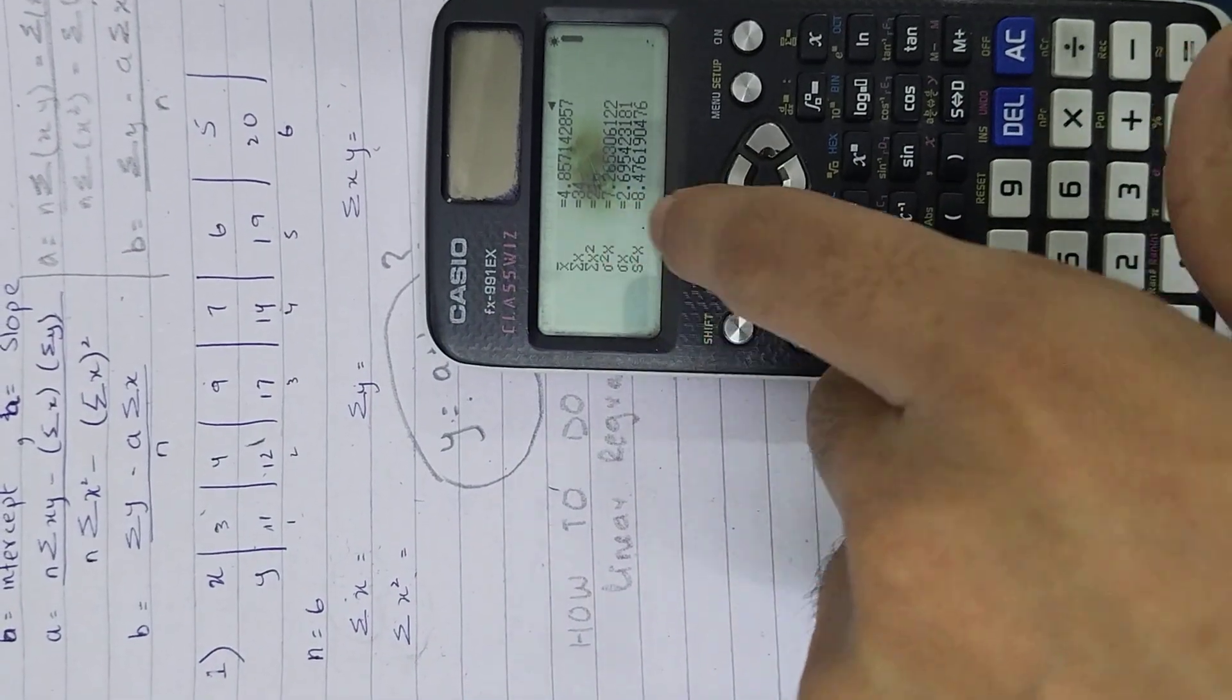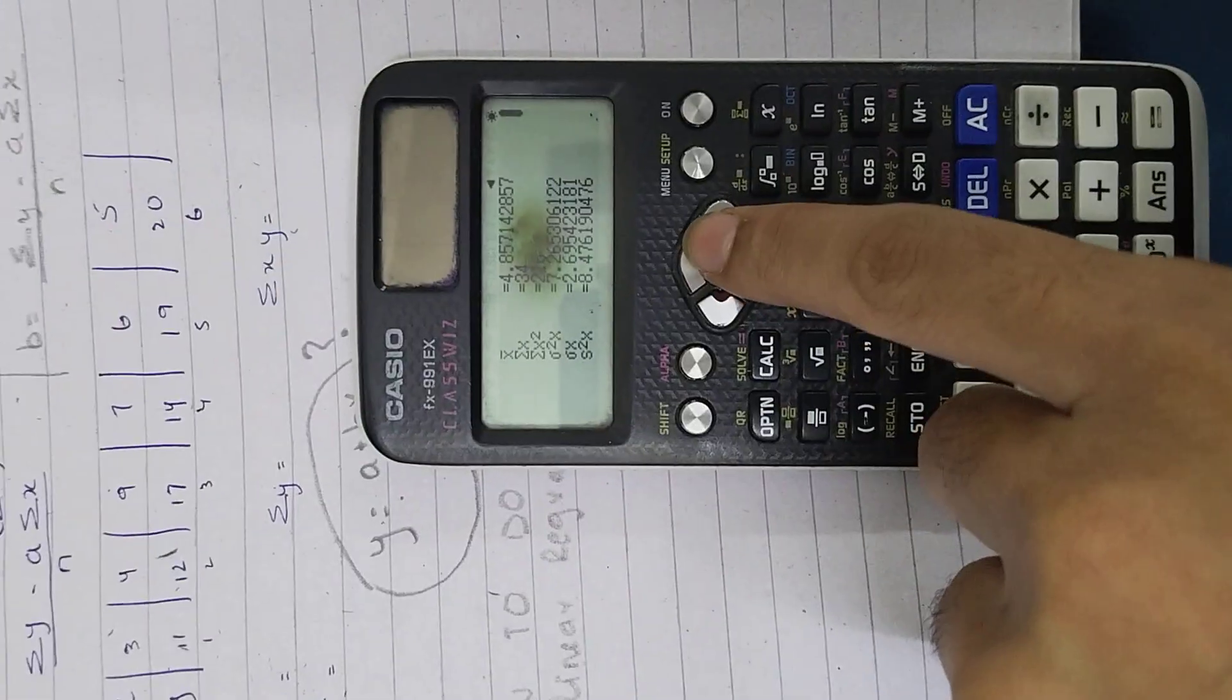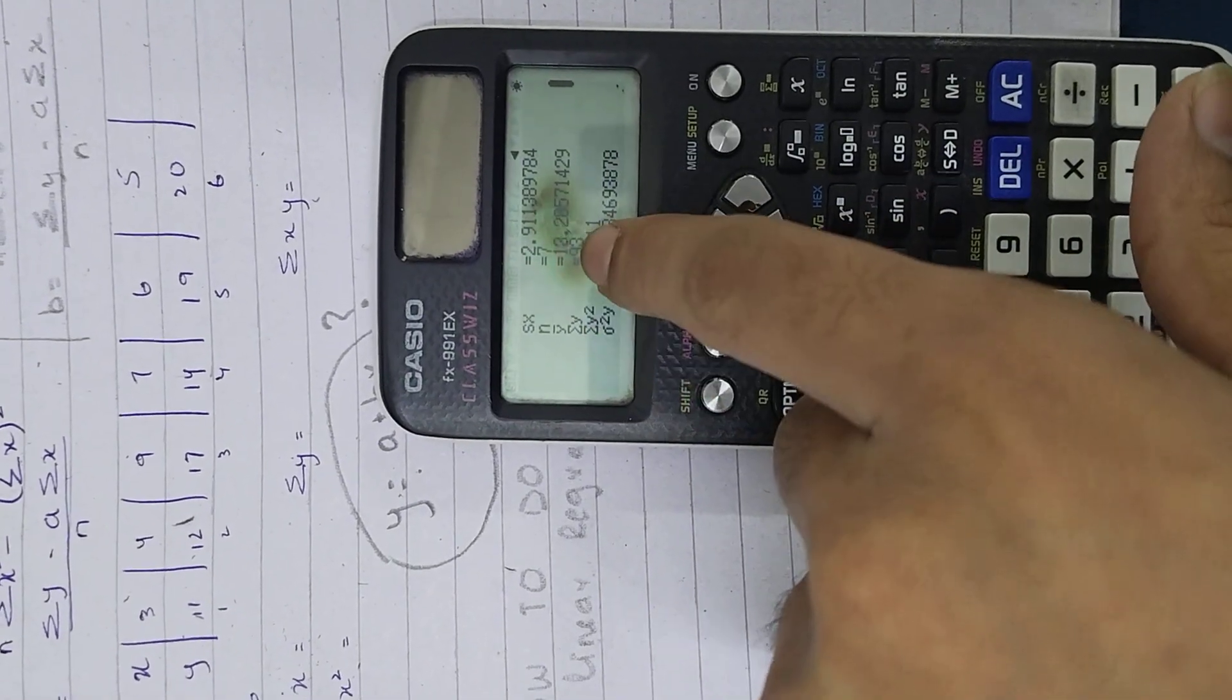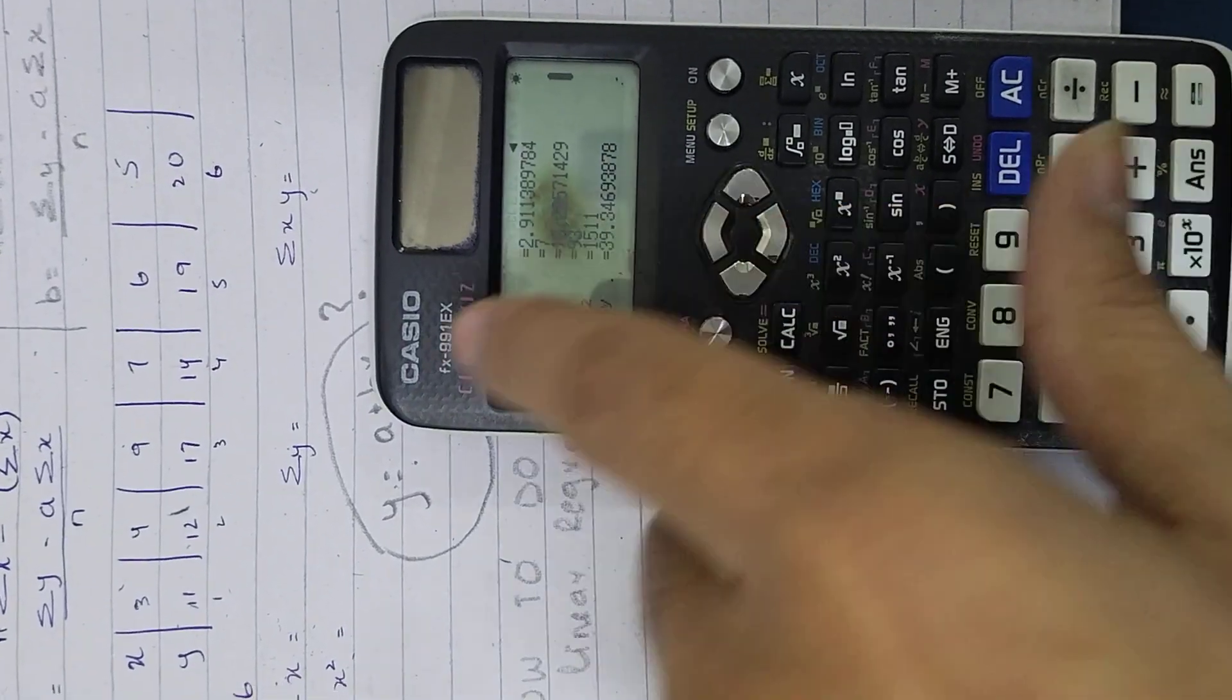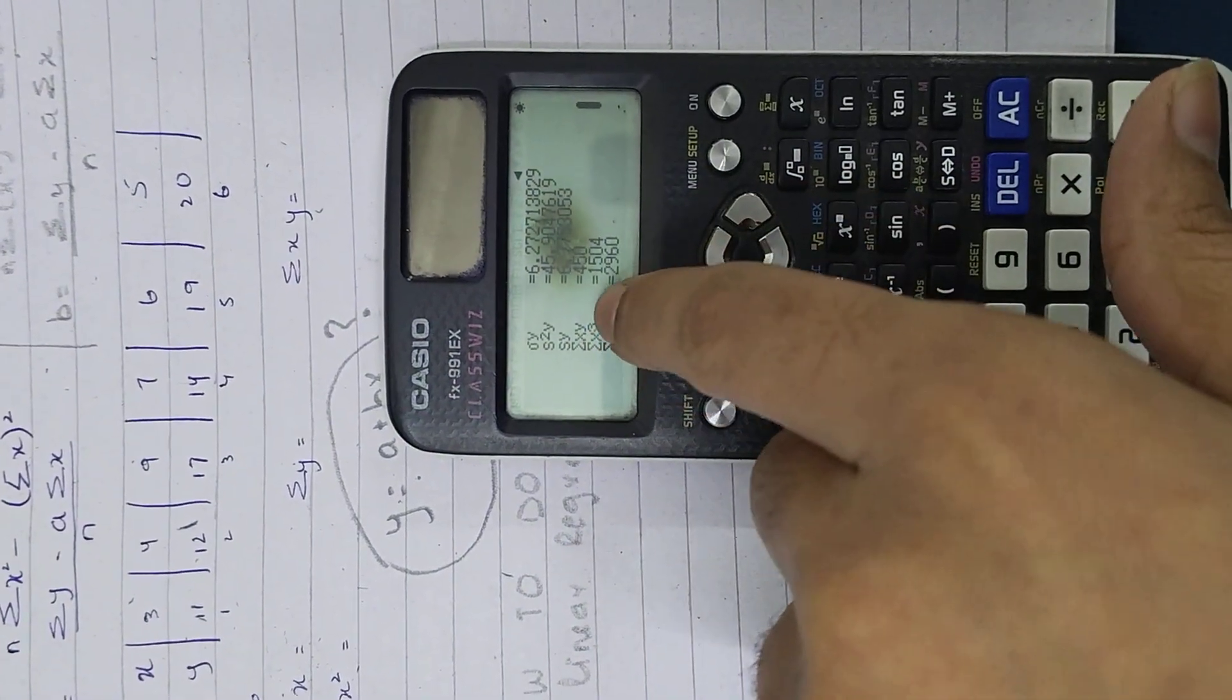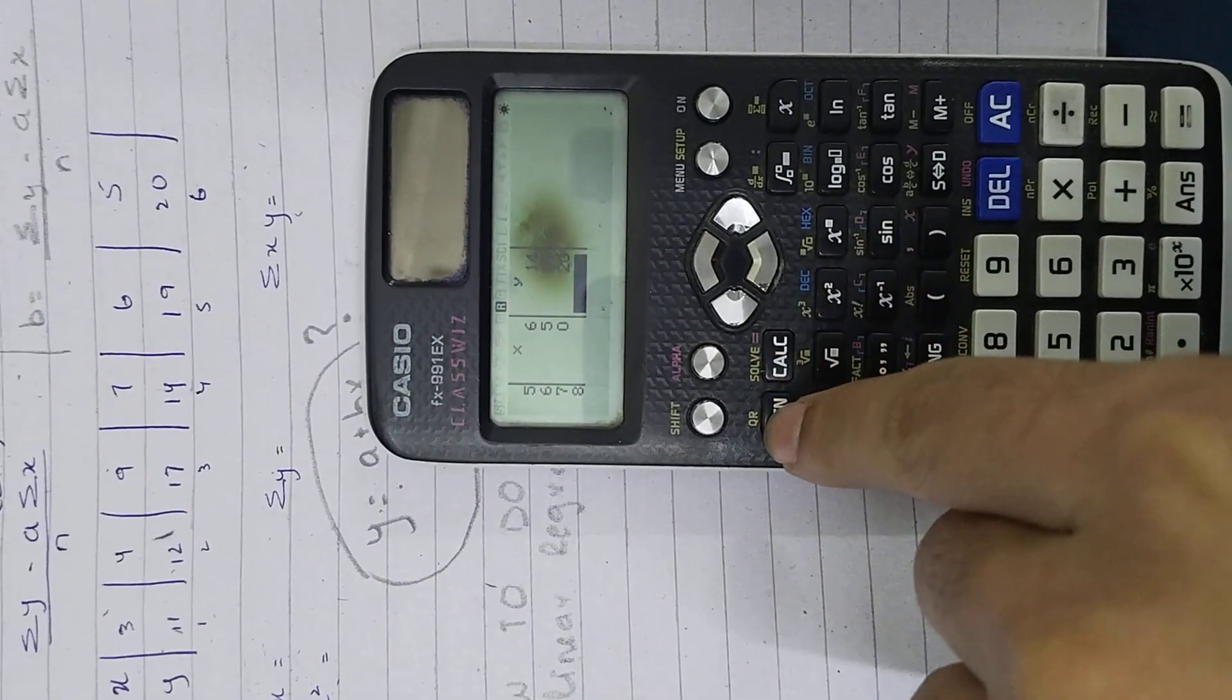For summation Y, summation X square is 216. And when I go down, I will see the Y values: 93 and 1511. We have summation XY left, so I go down again and I will find this: 450.